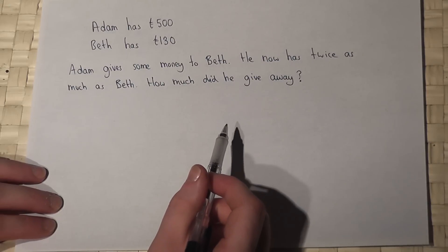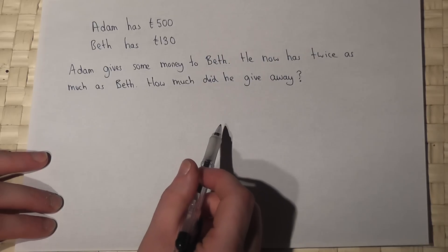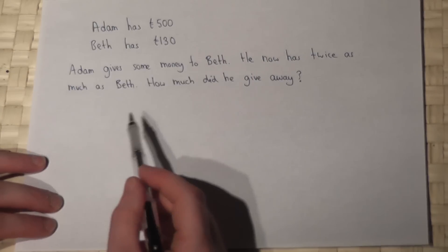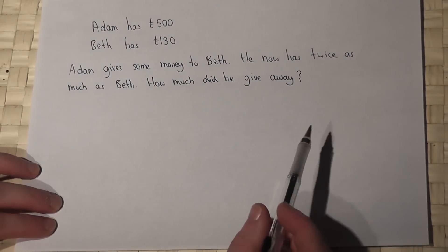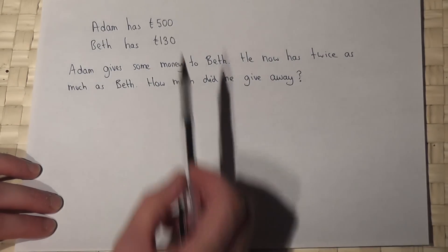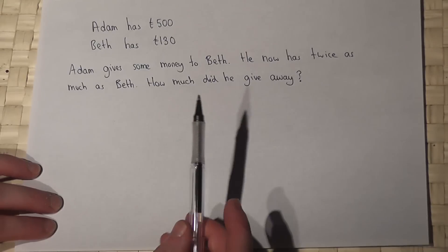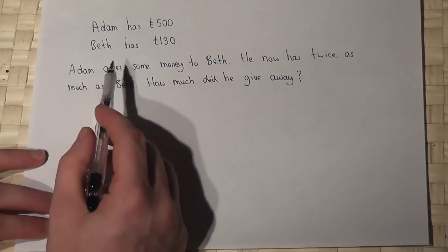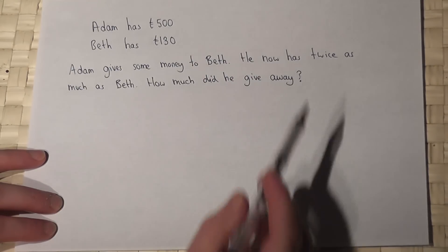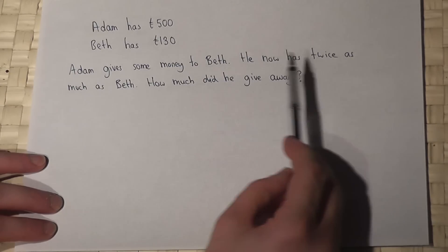This video reviews using algebra to solve problems involving proportion, ratio, and money. Adam has £500 and Beth has £130. Adam gives some money to Beth which is unknown, but he now has twice as much as Beth.